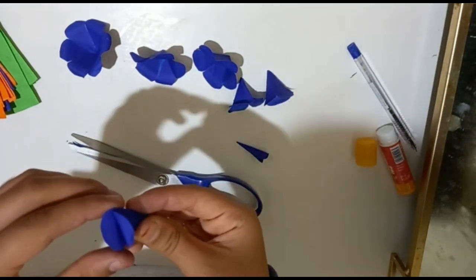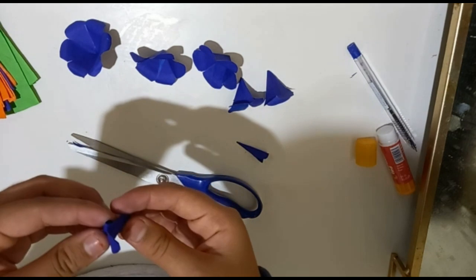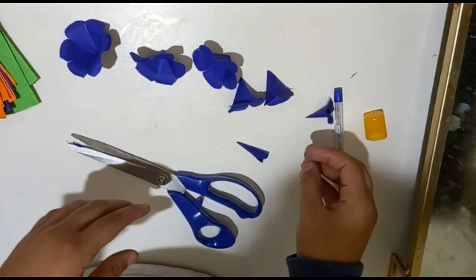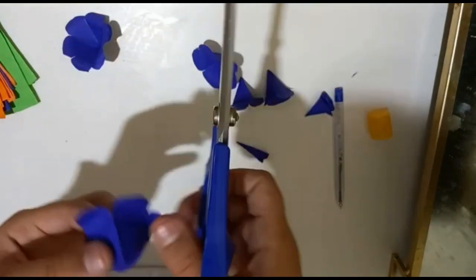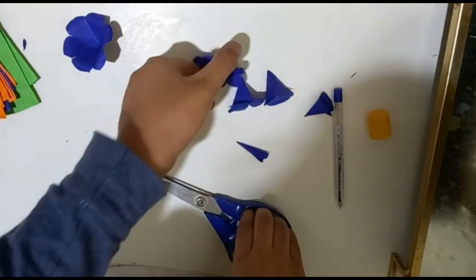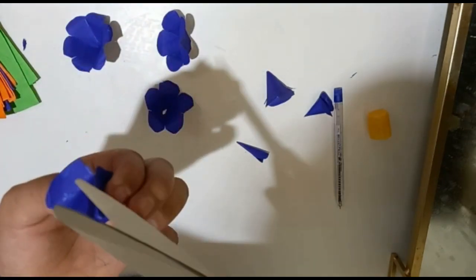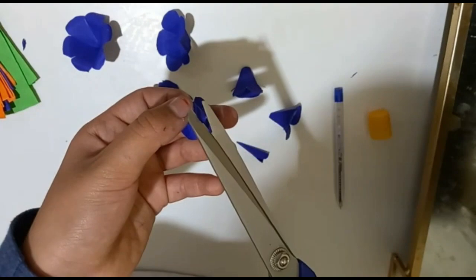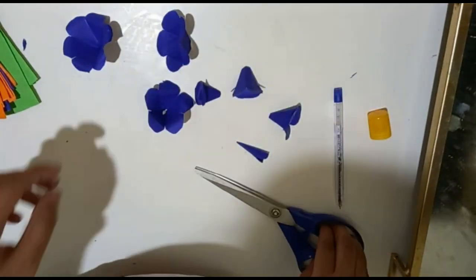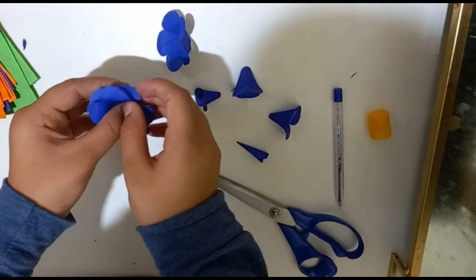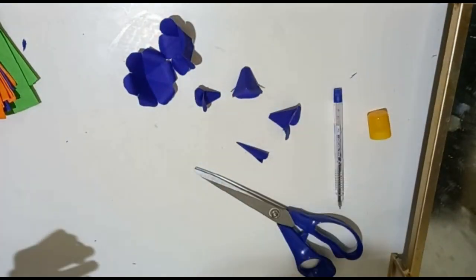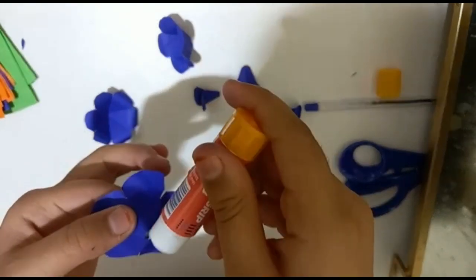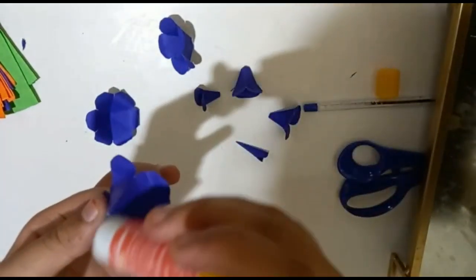Now we're gonna fold the previous petals. See, I told you it'll be a bit difficult, so you need something sharp that will make a hole in it like that. So we're gonna just cut the tips because they'll be sharp, right. Okay, so let's be like this. Now we'll take our glue and just stick it like this.